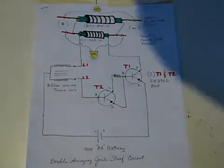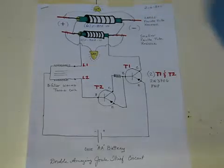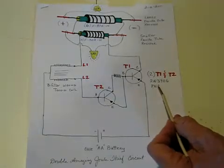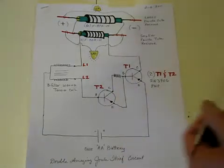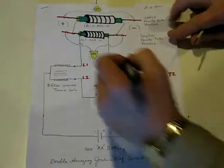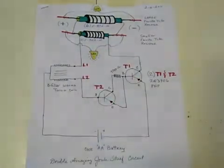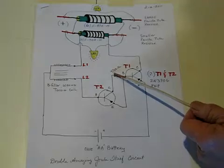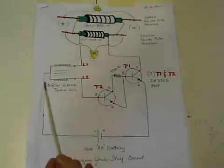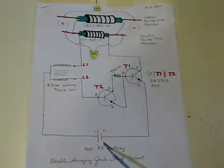Okay what we got here is I used 2N3906 PNP transistors. Both of these transistors are the same. This resistor is a 4700 ohm resistor and this is just a bi-filler wound toroid coil. And right here goes your battery.